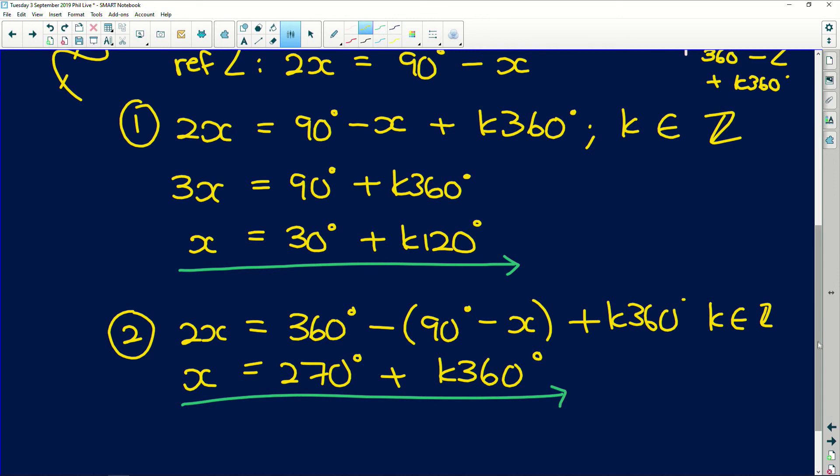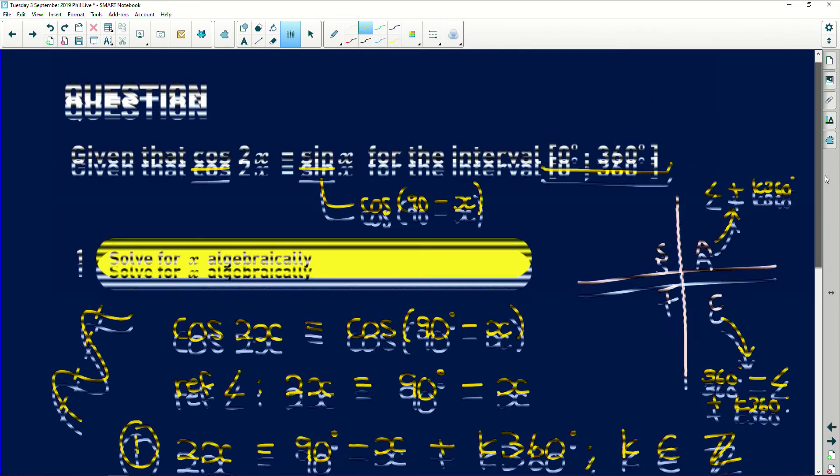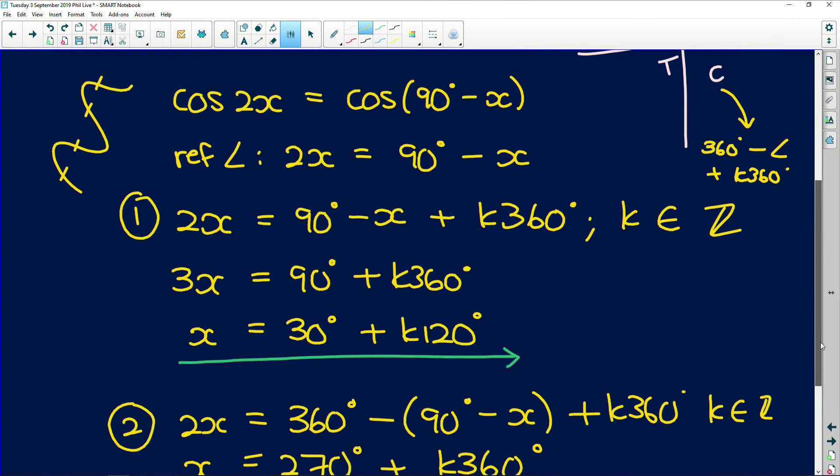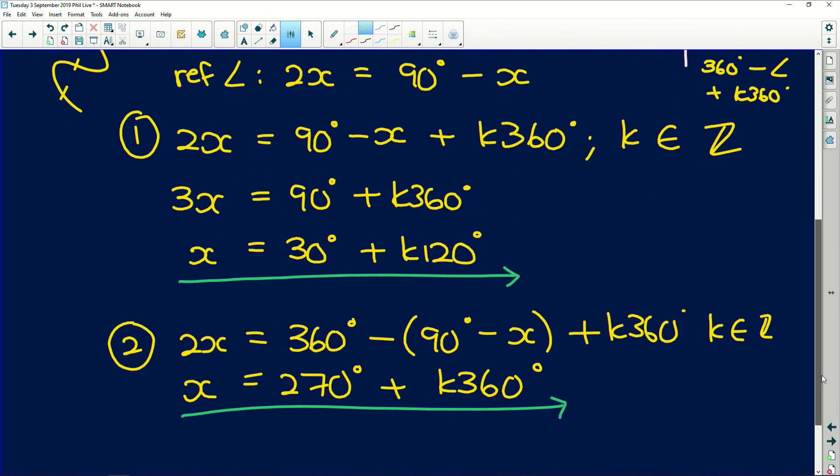But remember right at the beginning. Very important. They gave us a restriction. We're going from 0 degrees to 360. Both of them included. So we need to go and narrow that down.